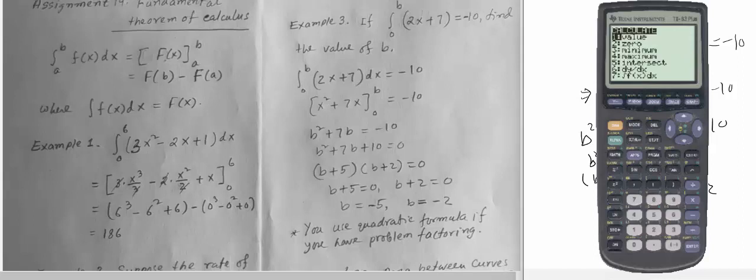These are the solutions here. You can go to second trace, 2 for zero. Move your pointer, let's find this one first. Left side is this one, enter, and move it to the right side of the zero that you're expecting, hit enter. That gives you negative 2 in here.